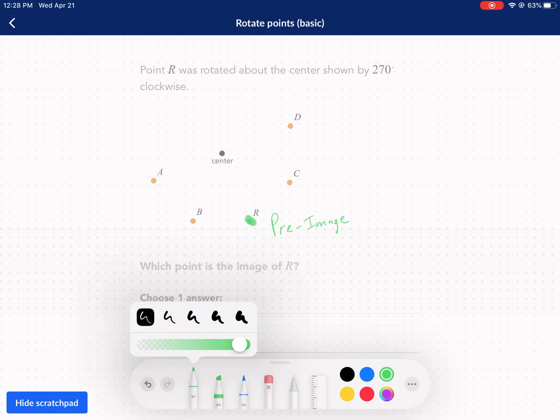Now a couple things about rotations. Rotations maintain the distance from the center. So imagine this is like lassoed to this pole and this rope will not change the length. But it will change where it goes. In this case, we're going 270 degrees clockwise.